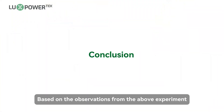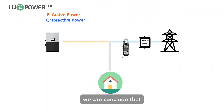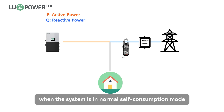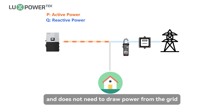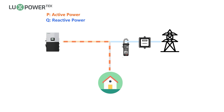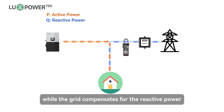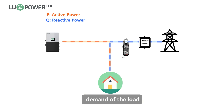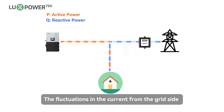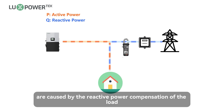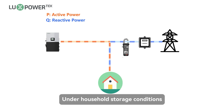Based on the observations from the above experiment, we can conclude that when the system is in normal self-consumption mode and does not need to draw power from the grid, the inverter system meets the active power demand of the load, while the grid compensates for the reactive power demand of the load. The fluctuations in the current from the grid side are caused by the reactive power compensation of the load. Under household storage conditions, reactive power is typically not included in the cost of power loss.